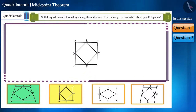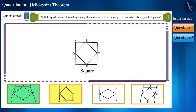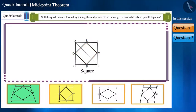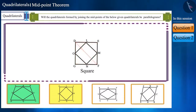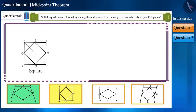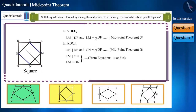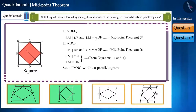The second quadrilateral DEFG is a square. Will the quadrilateral LMNO formed by joining its midpoints also be a parallelogram? Yes — here too, by drawing diagonal DF we get two triangles DEF and DGF. You can also draw diagonal GE. By using the midpoint theorem in both triangles, we can say that LM is parallel and equal to ON, therefore quadrilateral LMNO is a parallelogram.